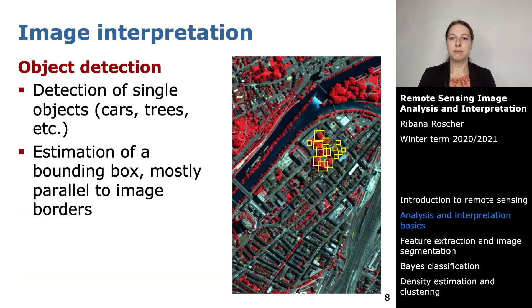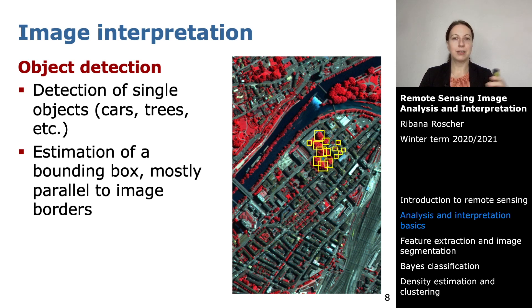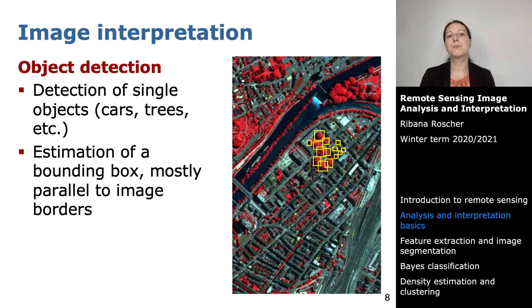Another interpretation task is object detection. Here you do not search for segments but detect specific objects such as cars or trees. Mostly you use bounding boxes to indicate where the object is, and these are typically parallel to image borders. However, this can be a problem — for example, with a long ship, most of the bounding box would not be filled by the ship.